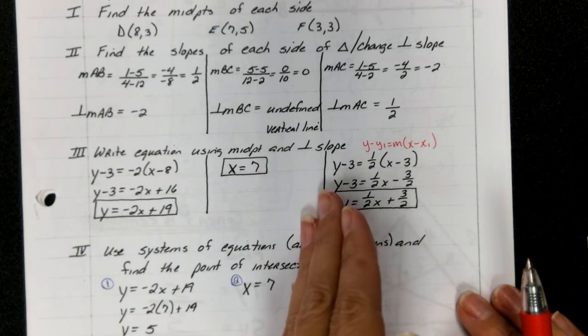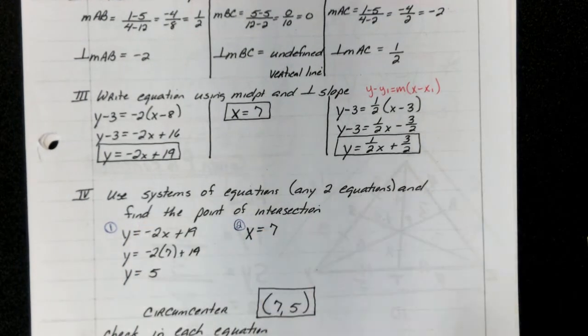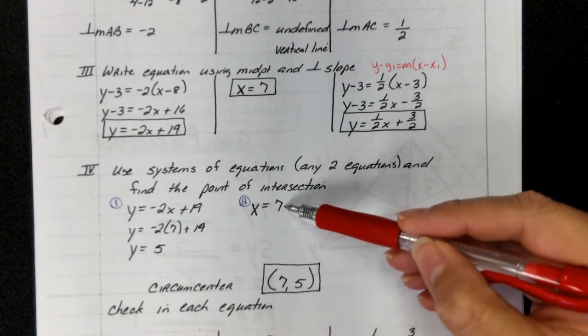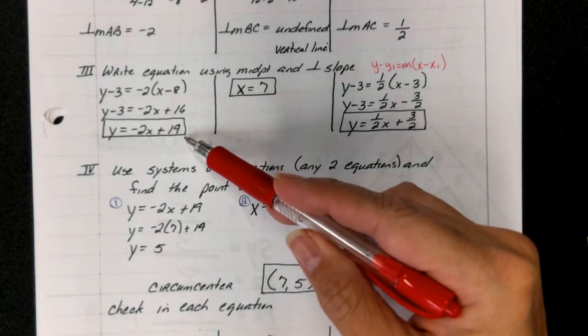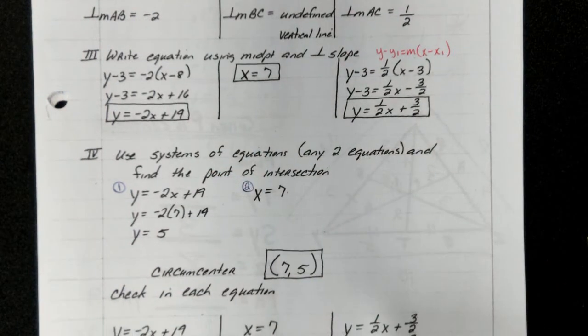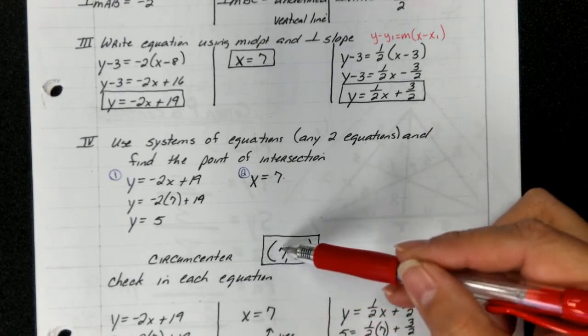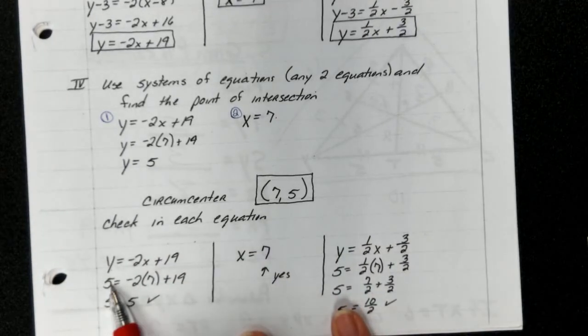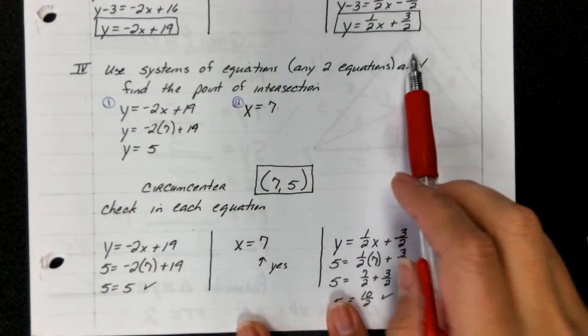Now guys, you have found three equations. You only need two of them for your systems, because step four is use systems of equations. Any two equations guys. If you already know an x value, pick one of these and plug it in. My guess is most people will go with the one without fractions: negative 2 times 7 plus 19, we get 5. So therefore your circumcenter would be (7,5). Because you can check to see if this works, y equals 5, plug in your x, they should equal.